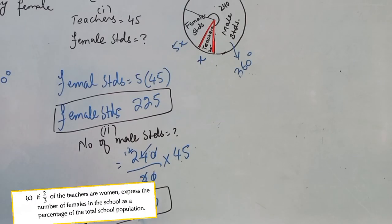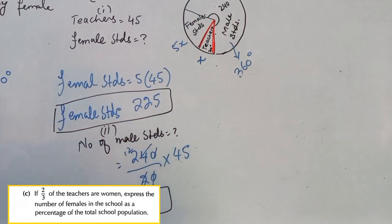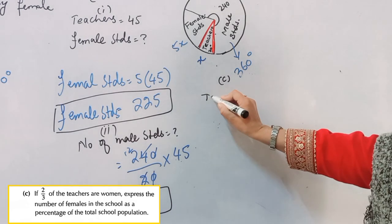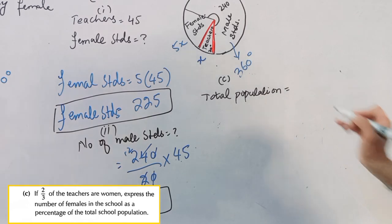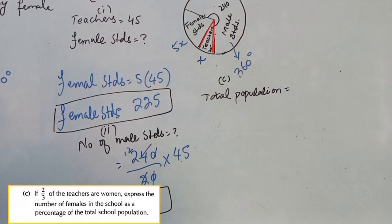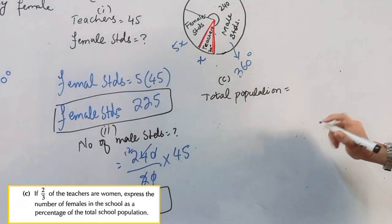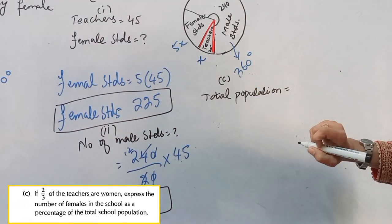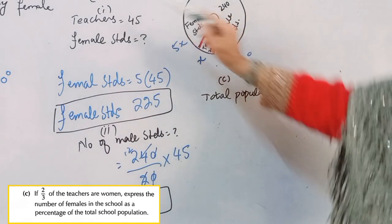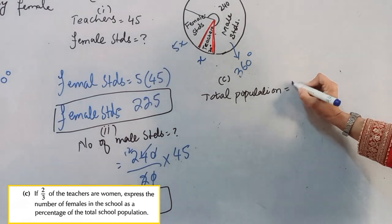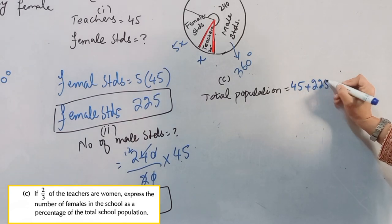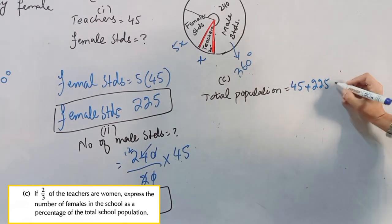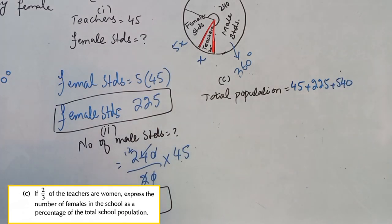Now in part c, we are asked: if 2/3 of the teachers are women, express the number of females in the school as a percentage of total school population. We need total school population and the number of females. Total population equals teachers 45 plus female students 225 plus male students 540, which gives 810.